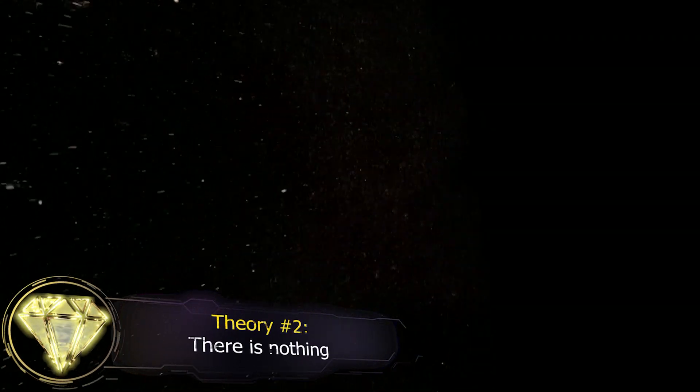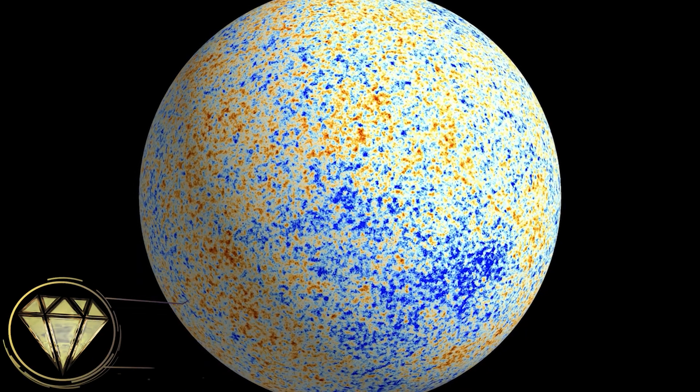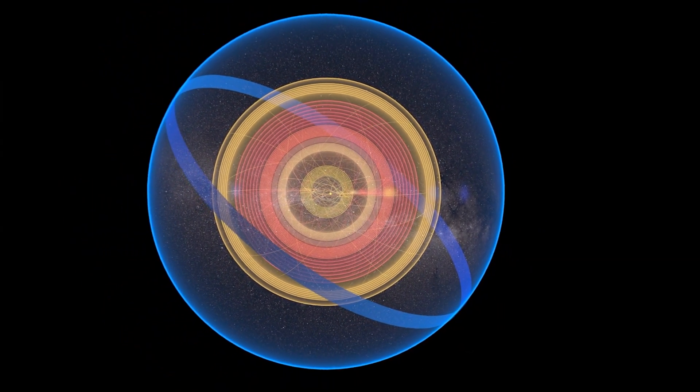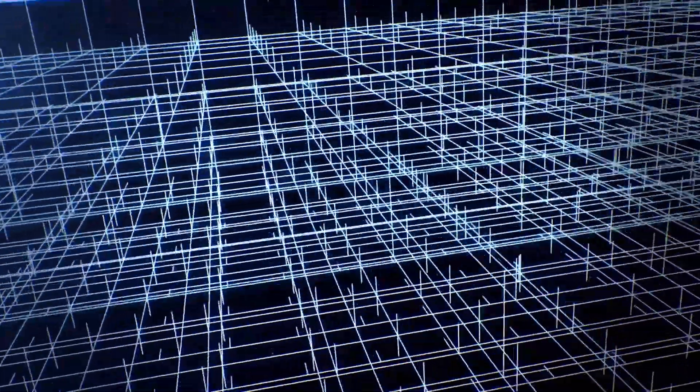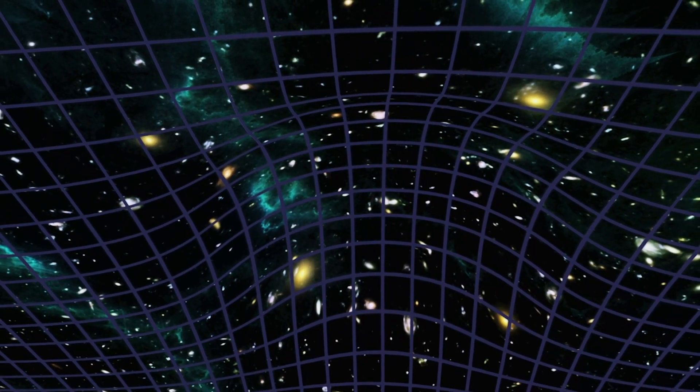Theory 2: There is nothing. Skeptical scientists point out that there is no basis for the theory that anything exists beyond the observable portion of the universe. There would not even be a vacuum there. That is because the vacuum would also be space. Space itself would be limited to the observable universe.